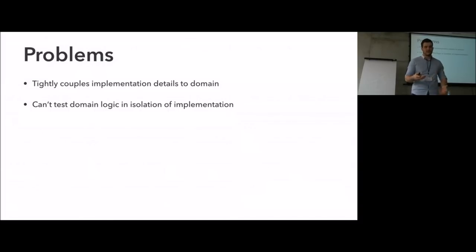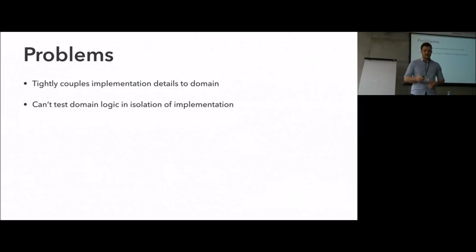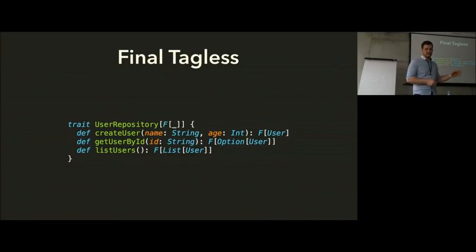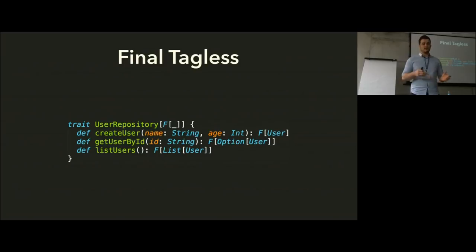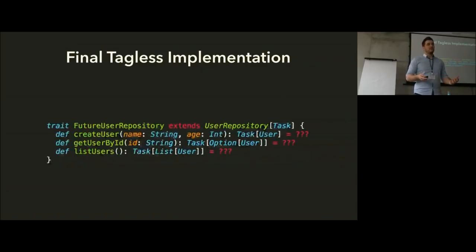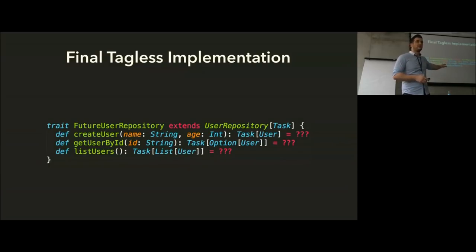This means we can't do things like testing domain logic in isolation of its implementation. In comes something like final tagless, which is a really nice way of representing effects. It says: I've got this type F, and I'm going to use it to represent some effect. I don't know what that effect is yet, but I will choose at the time of implementation. The domain still looks more or less exactly the same, and when we implement it we create a subclass and choose our effect — for example, a Task.